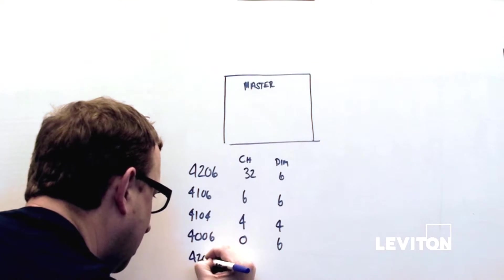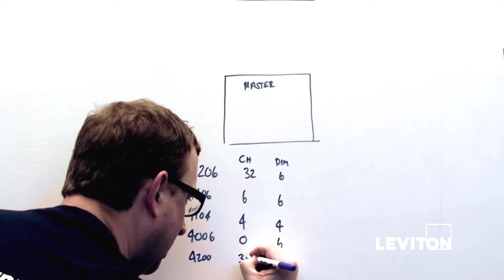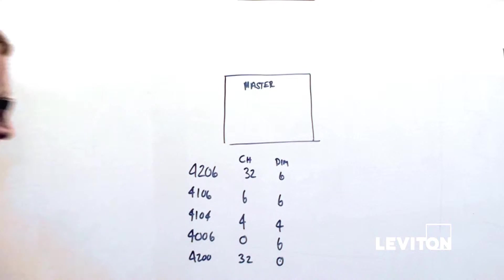Finally, the 4200 has 32 channels and 0 dimmers. You might be asking, what do we do or why would we want to have more channels than we have dimmers in the box? Quite simply, that's so that we can control other things that might be in the network.